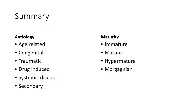In summary, cataracts can be easily classified according to their etiology or their maturity. Classified by etiology, we can have age-related, congenital, traumatic, drug-induced, cataracts associated with systemic disease, and secondary cataracts associated with another ocular condition. Classified by maturity, they can be immature, mature, hypermature, or Morganian.